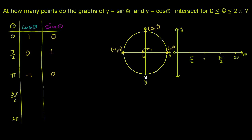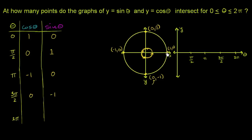At 3π/2, the coordinate is (0, −1), so cosine of θ is 0 and sine of θ is −1. Then at 2π, we've made a full revolution and we're back to the same point as θ = 0, so cosine of θ is 1 and sine of θ is 0.